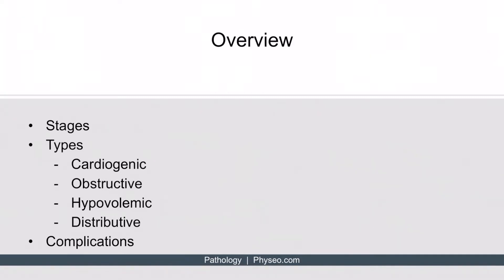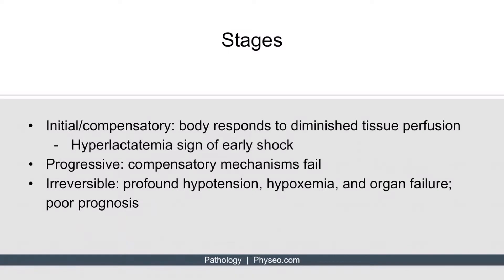Let's begin by discussing the stages of shock. Shock can be divided into three stages: initial or compensatory, progressive, and irreversible. The first stage is the compensated initial stage where the body tries to compensate for diminished tissue perfusion. Examples of compensation include tachycardia and peripheral vasoconstriction, which helps maintain cardiac output and blood pressure. Another thing to keep in mind is that hyperlactatemia can serve as an early sign of shock.